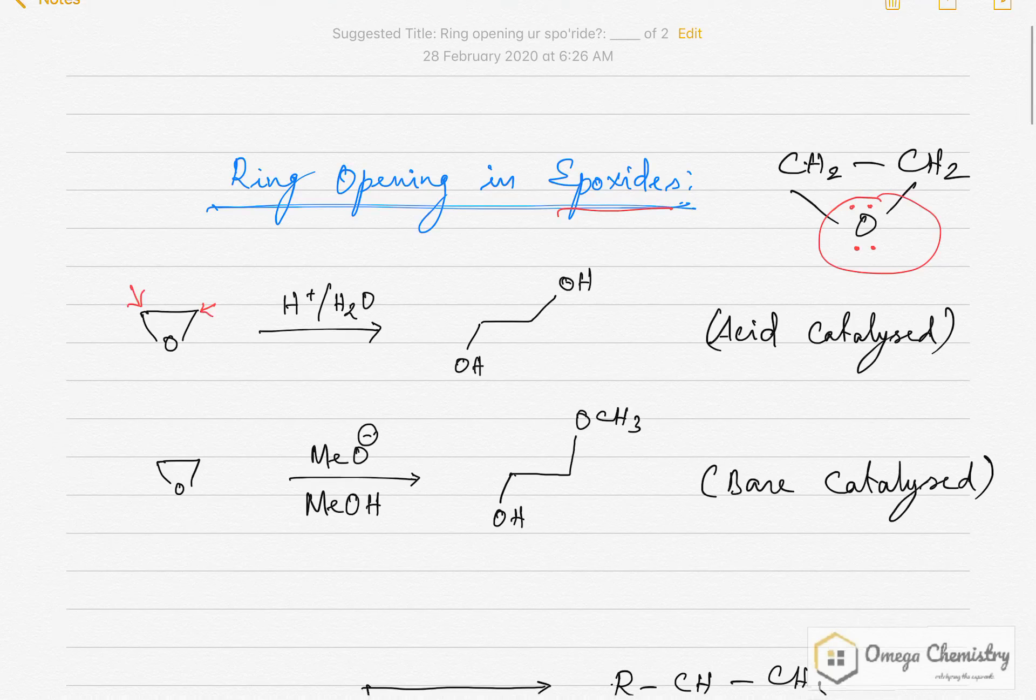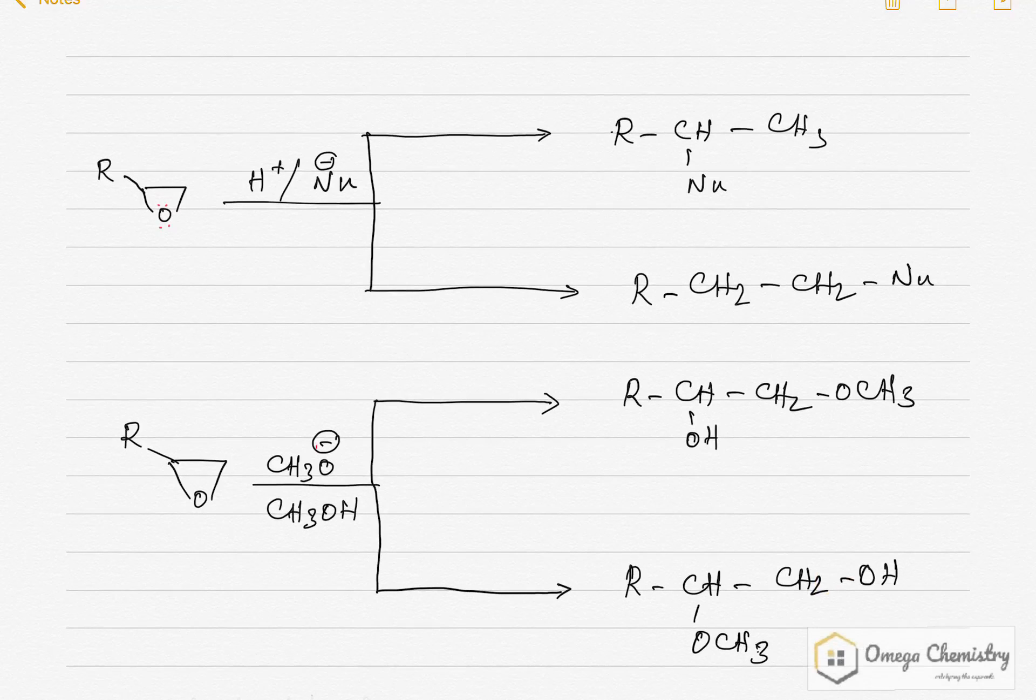But when it comes to unsymmetrical epoxides like this, and the site of nucleophilic attack, if it differs, it will result in different products formation. For example, if the nucleophile attacks this carbon, I will get this product. Whereas if the nucleophile attacks here, then it will result in this product.